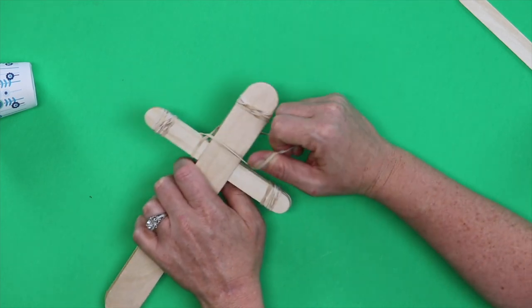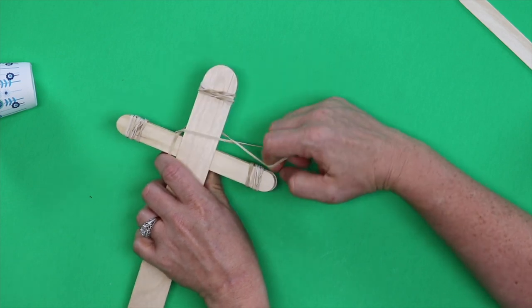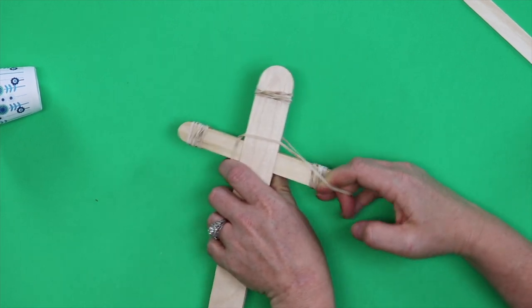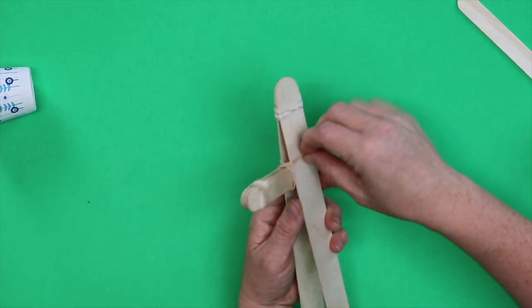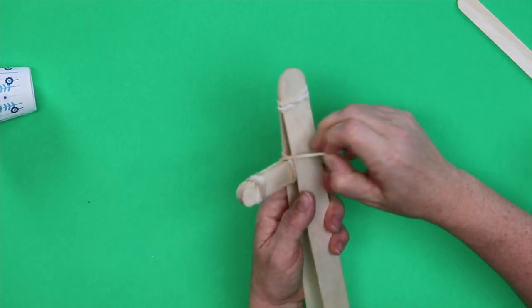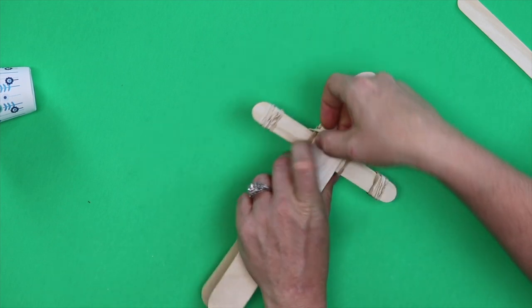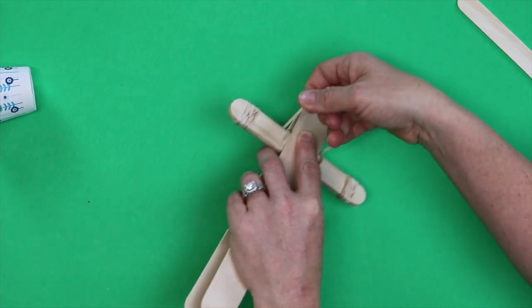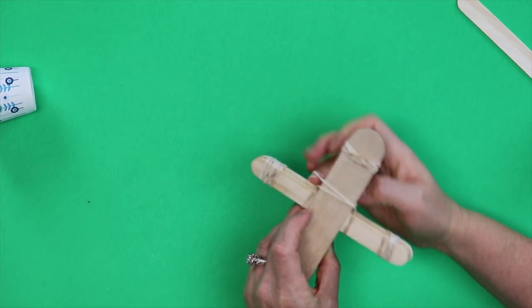So you're going to start by putting the rubber band around your fulcrum on one side and twist it. Okay, now we're going to put it around the head of the catapult. Good. Give it another twist. Now put it around the other side of the fulcrum. Now see how that's good, but the rubber band is still kind of loose. We want it to be a little tighter. So we're going to take this one that's on the head, this rubber band right here, twist it one more time and wrap it around.